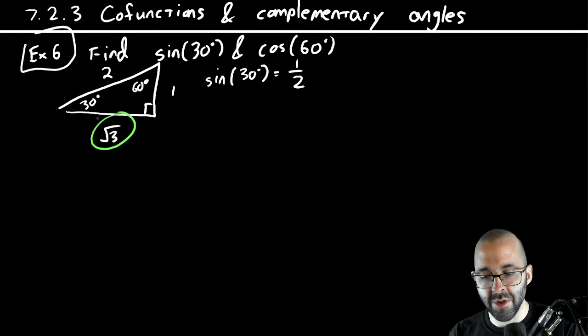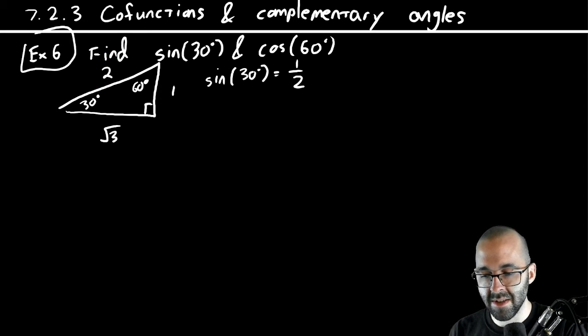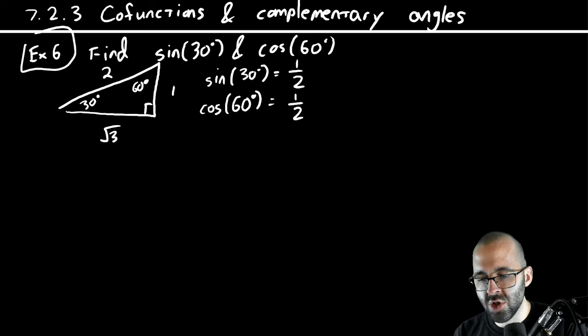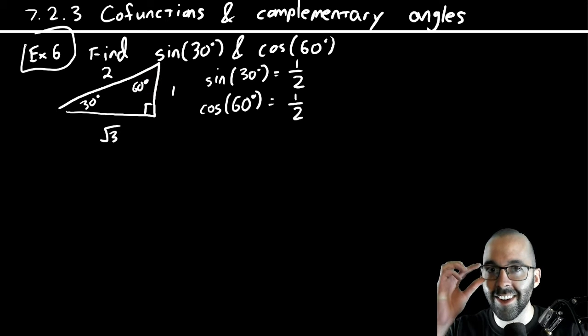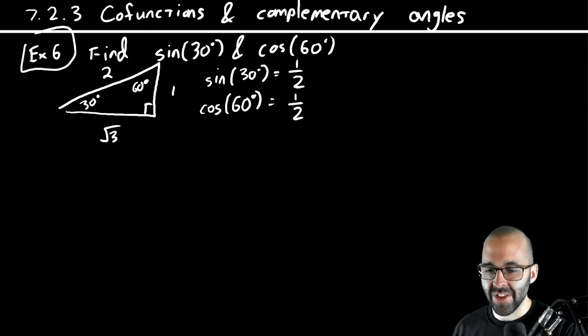Remember for 30 degrees adjacent's here, but for 60 degrees this is the adjacent side. So hypotenuse is the same. Wait a minute, the cosine of 60 degrees is also one half. It's the same numbers because the adjacent for 60, it's the adjacent for that one, it's the opposite of that one. That's always going to be the case.